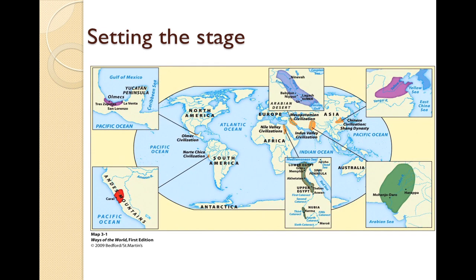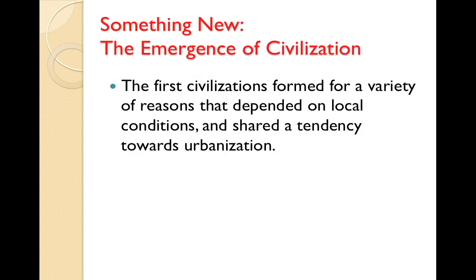Once a society settles down and produces a surplus of food, it can begin to develop the basic requirements for civilization, such as specialization of labor — where different people are assigned different tasks — a consistent set of laws, and a security apparatus. The first red heading is called 'Something New: The Emergence of Civilization.' The main idea is that the first civilizations formed for a variety of reasons that depended on local conditions, and shared a tendency towards urbanization.